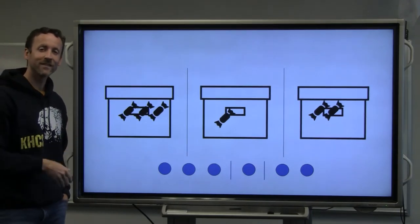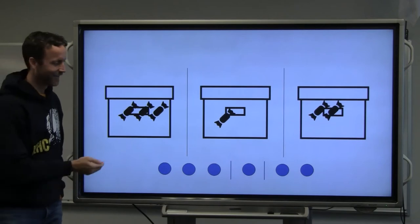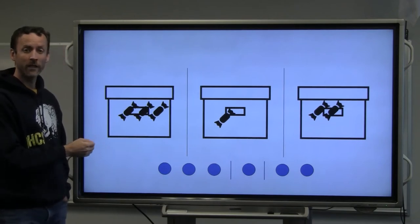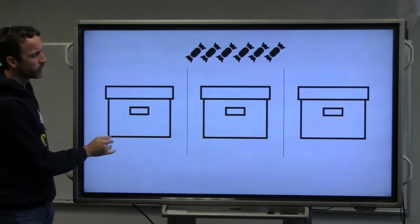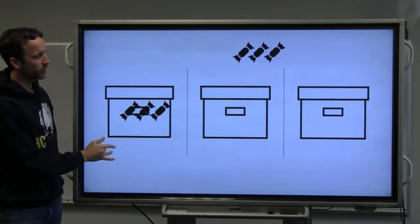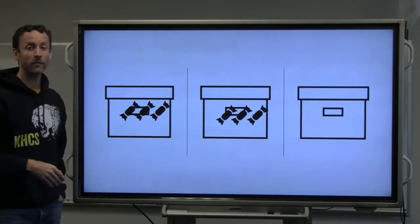And the name of this method is sticks and stones. So this is one method, or one way. Or another way, we could put three in the first box, and three in the next box, and then none in the third box.